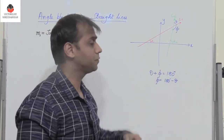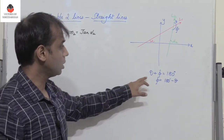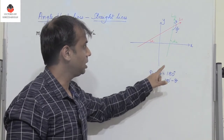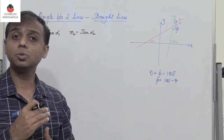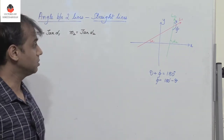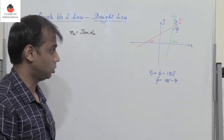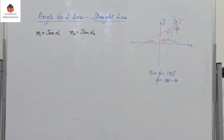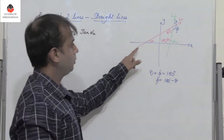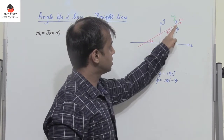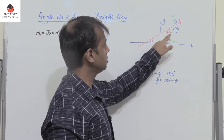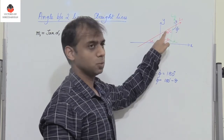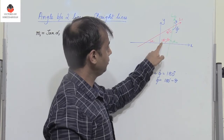We need to find angle theta. Since theta equals 180 minus phi, let us represent theta in terms of alpha1 and alpha2, as these are the known angles. Observing the figure, there is a triangle formed, and the angle theta appears again as a vertically opposite angle.